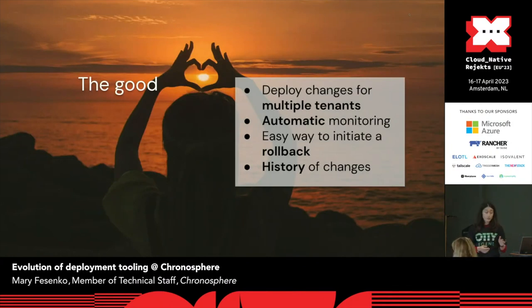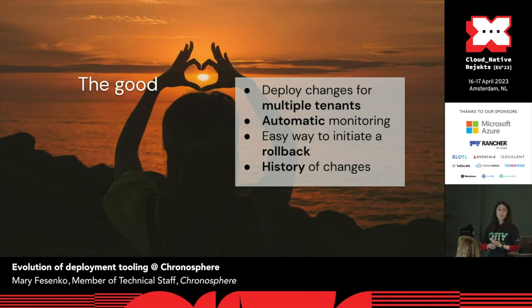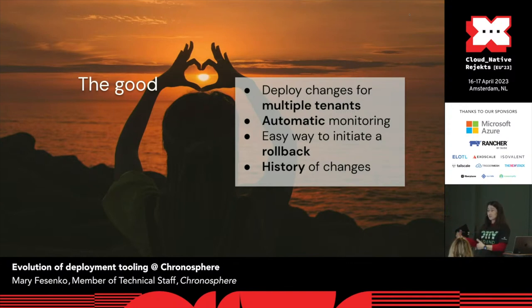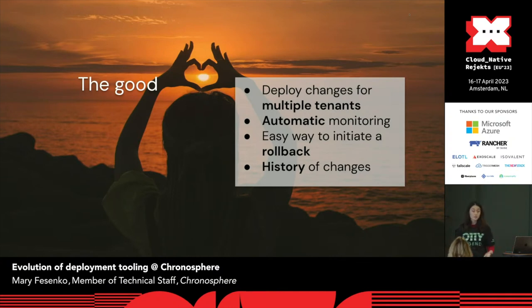We rolled out the first version of Deployer within one or two months, gave it to all engineering teams, and gathered feedback. People liked that you could deploy changes to multiple tenants with one operation — a much nicer experience. They liked automatic monitoring for checking that no alerts were firing and detecting whether a service was failing to start. In the beginning, engineers were a little skeptical and would still open all the dashboards manually, but over time we gained their trust. Rollbacks were easier to initiate. And since we stored all workflows and rollback history, you now had access to a history of changes — if you see something odd in your metrics, you can go back and compare it with what operations were performed at that time.